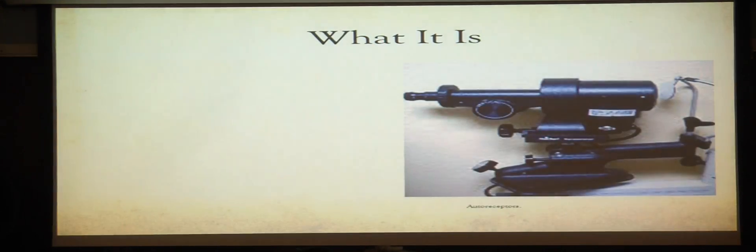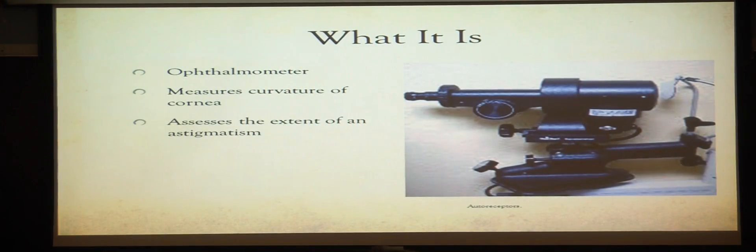The keratometer is also known as the ophthalmometer, and it measures the curvature of the cornea to determine the extent and axis of astigmatism.